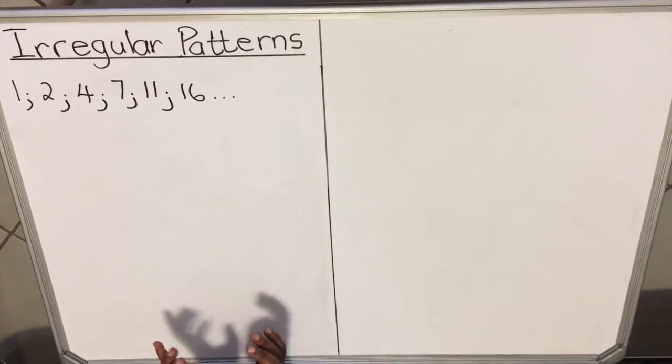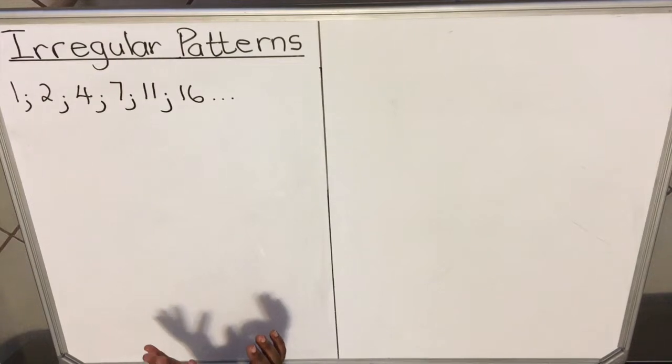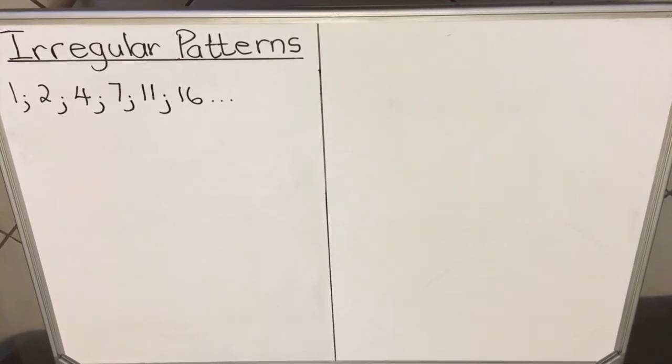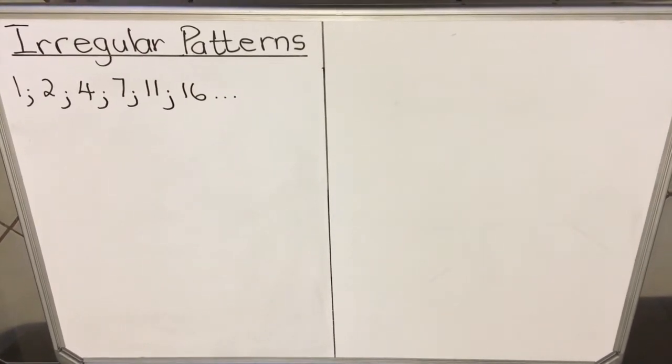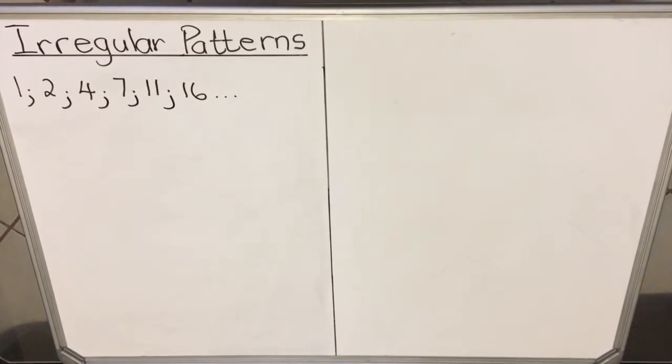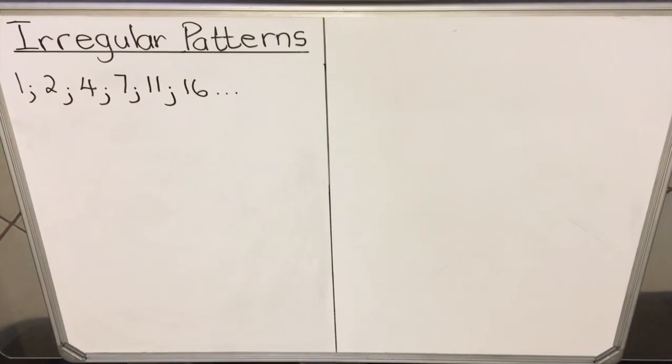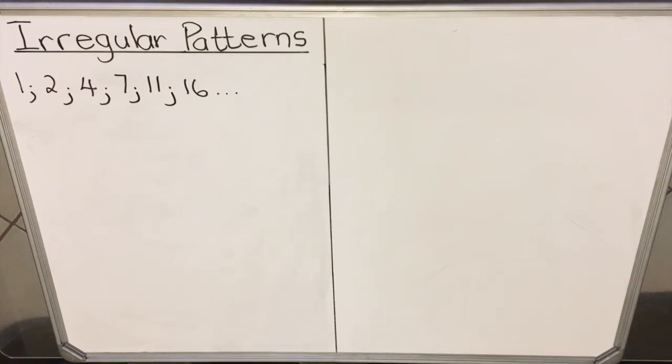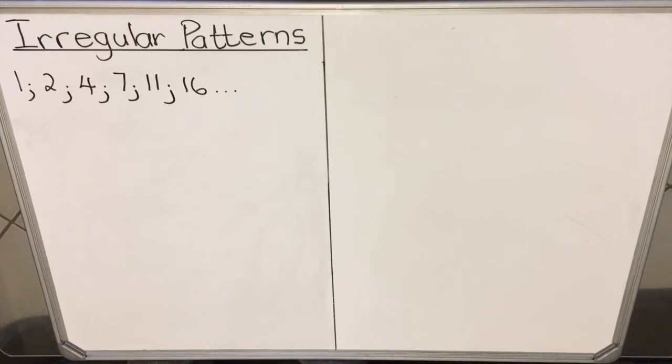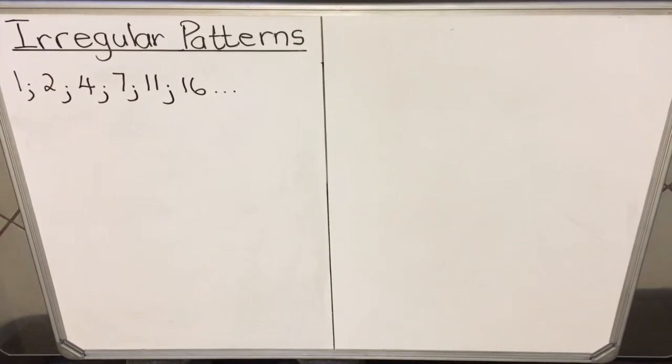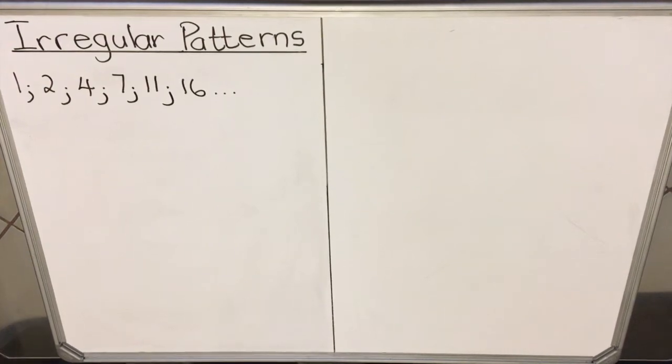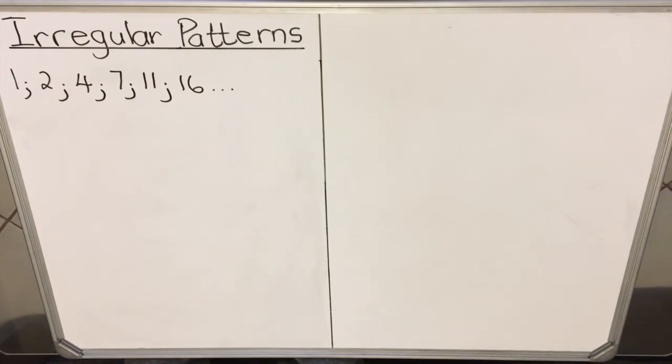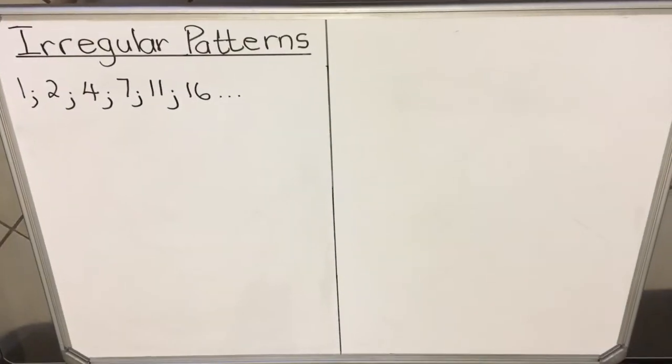Hello everyone, we're going to look at a specific kind of patterns: irregular patterns. We call them irregular because they don't have a common ratio or a common difference. So you need to figure out for that particular pattern what is the pattern. Sometimes they'll give you cubic ones, sometimes square ones. Here I'm going to show you a particular range of patterns that don't have a regular pattern. We're going to look at two examples.